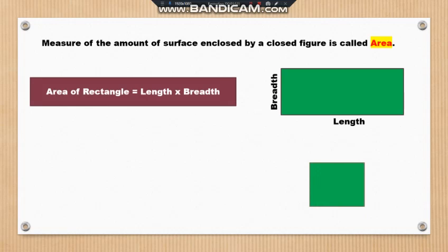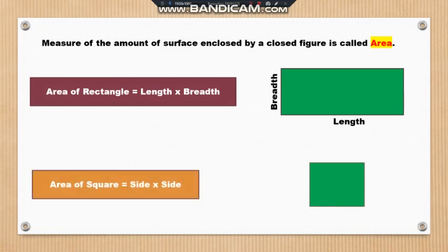Now look at another figure. The name of this figure is square. The condition for a square is that all sides are equal. Therefore, to find out the area of a square, use the formula: side multiplied by side.